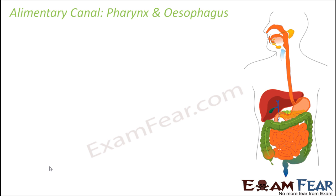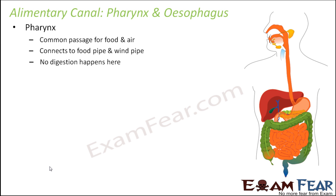Now that we have discussed mouth and buccal cavity, it's time for pharynx and esophagus, the next parts of the alimentary canal. We saw that the food entered through the mouth, then it went into the buccal cavity where it got mixed with the saliva and was broken down into smaller pieces by teeth. Now this food moves into the pharynx. Pharynx is a common passage for food and air.